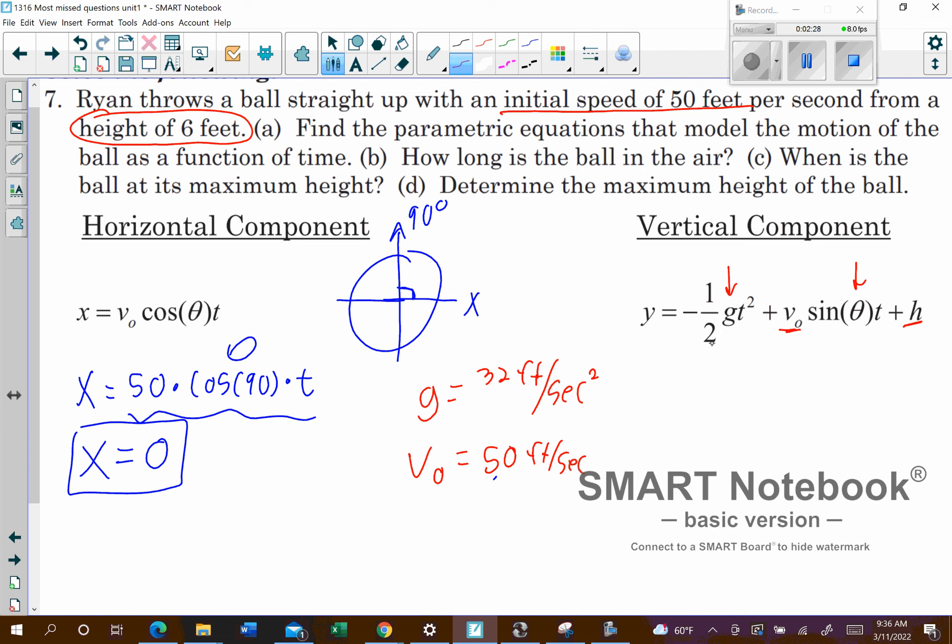Let's go ahead and clean this up. So y equals, I know my g-value is 32, and I'm going to multiply that by the negative 1 half. So that's actually going to give me negative 16, and then we have our t squared. Our v-naught is 50, so we're going to get plus 50. Sine of 90 degrees is 1, so this just turns to a 1, and then t. My height, we're starting at 6 feet, so plus 6. That's the equation you're going to need to use to find your other pieces of information.